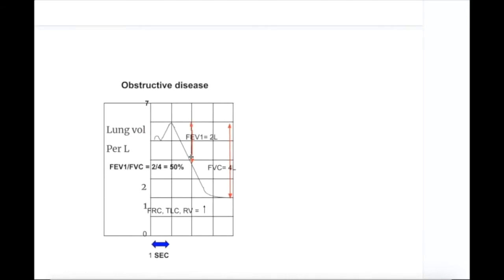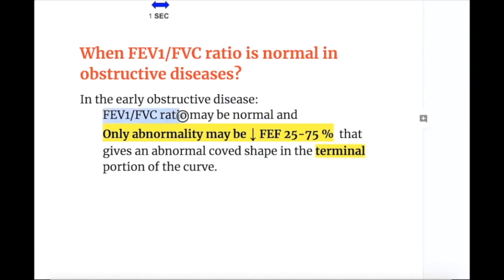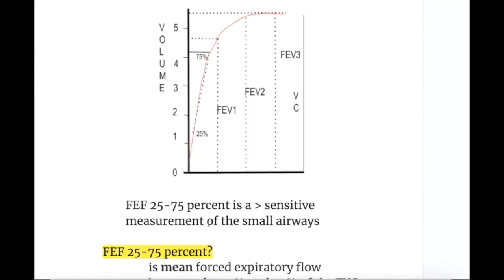In obstructive disorders, FEV1 in one second is 2 liters while FVC is 4 liters, giving a ratio of 50%, which is reduced. Functional residual capacity, TLC, and residual volume are all increased. In early obstructive disease, the FEV1/FVC ratio may be normal, and the only abnormality may be a decreased FEF 25–75%, giving an abnormal concave shape in the terminal portion of the curve.